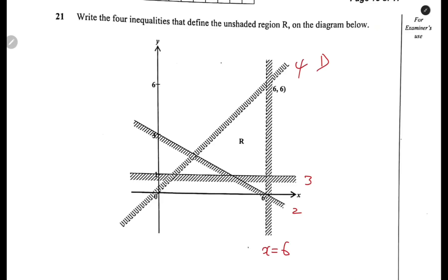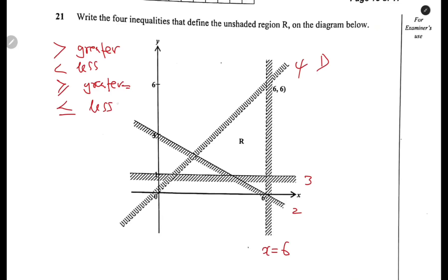You should know the inequality symbols. The greater than symbol and the less than symbol both use dotted lines. Greater than or equal to uses a solid line, and less than or equal to also uses a solid line. So those are things that you should have in mind.